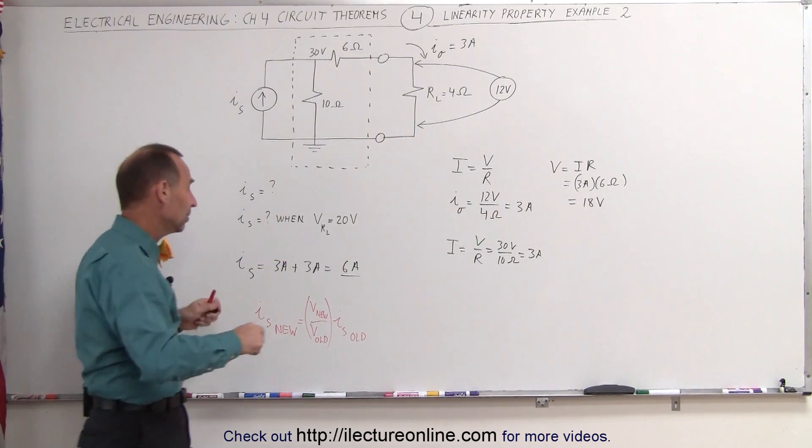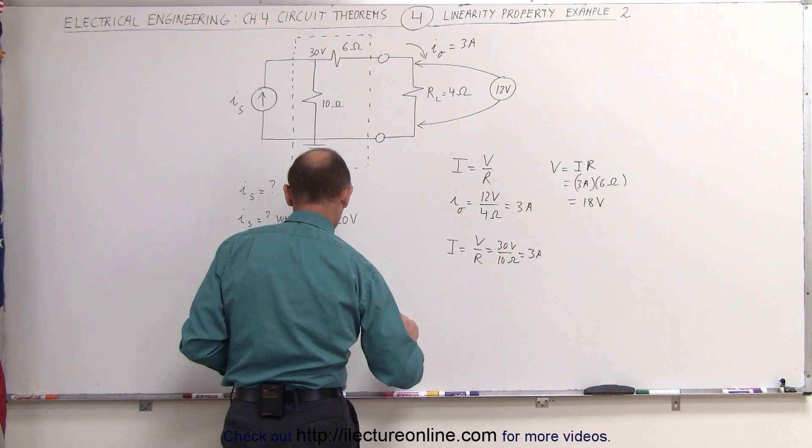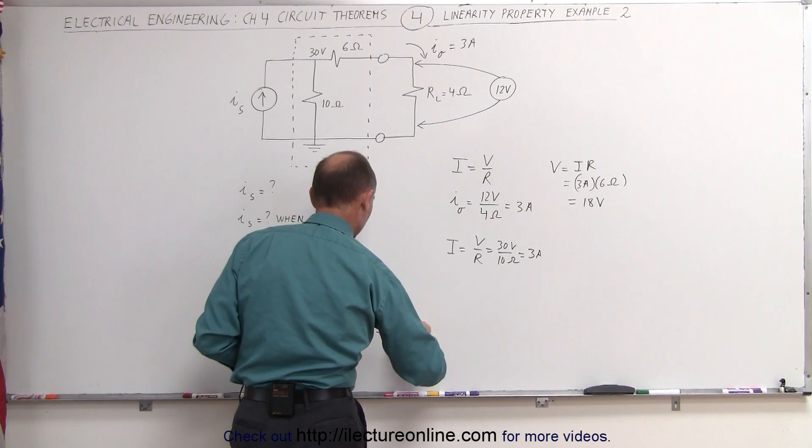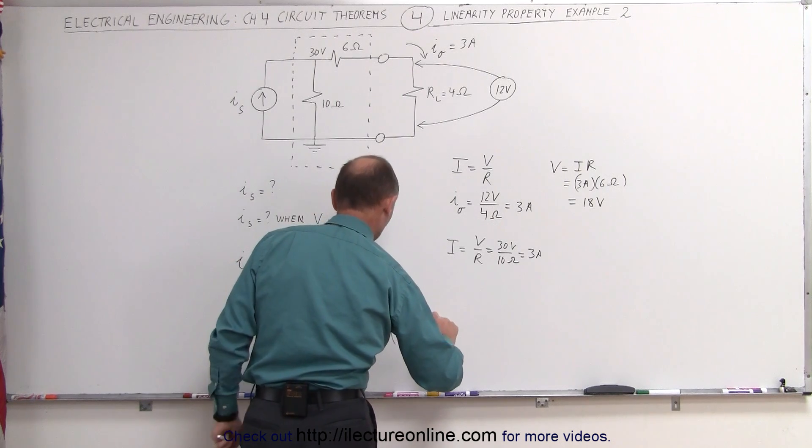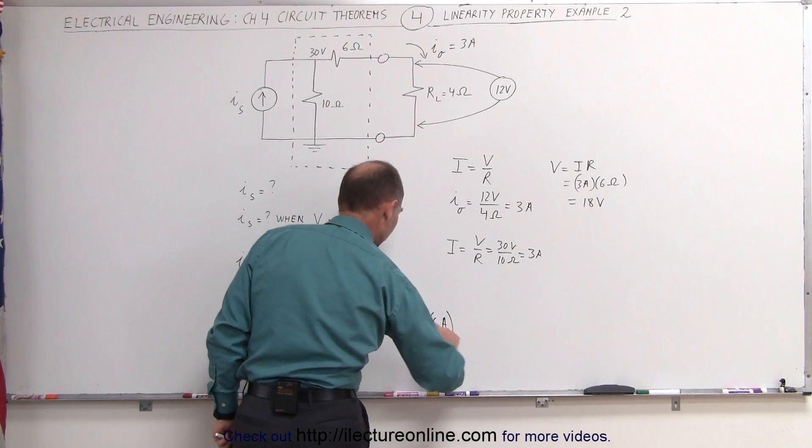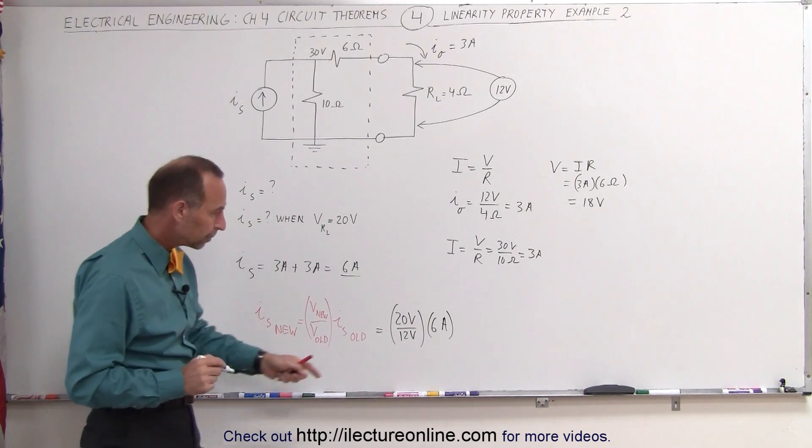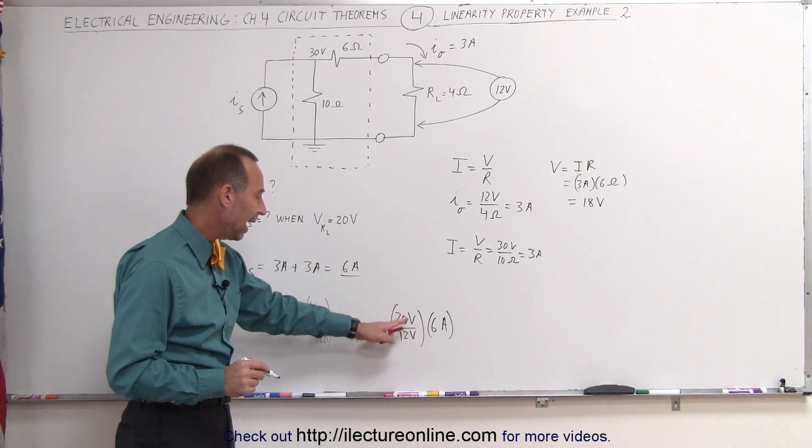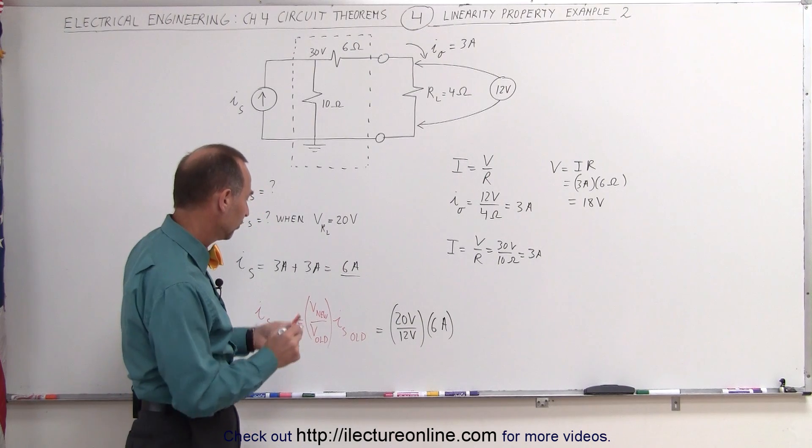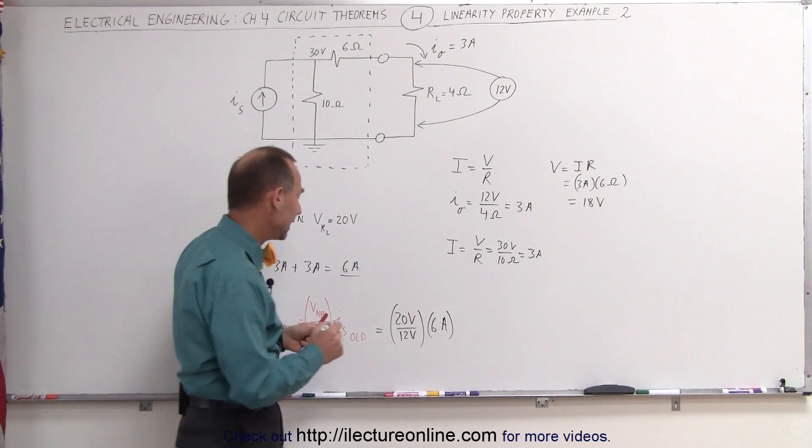Which means in this case, that would be equal to 20 volts divided by 12 volts multiplied times the original current, which is 6 amps when we had our initial conditions. 6 divided by 12, that's 1 half. 1 half times 20 volts, that would be 10 amps.